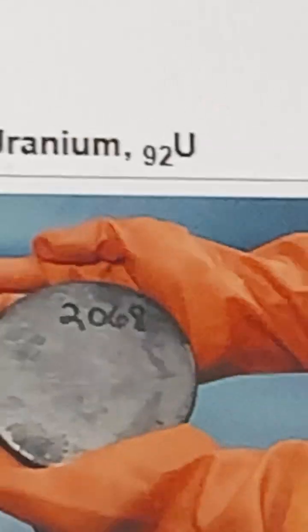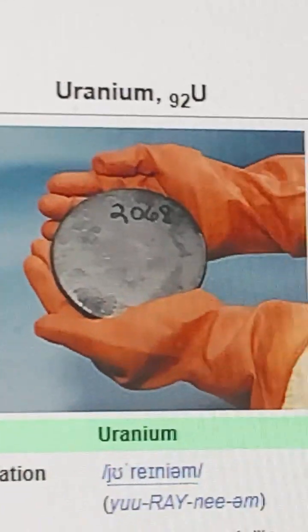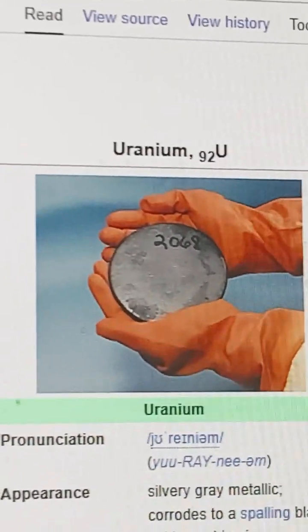Uranium has an atomic number of 92. It is a silvery gray metal in the actinide series of the periodic table. Uranium is weakly radioactive.